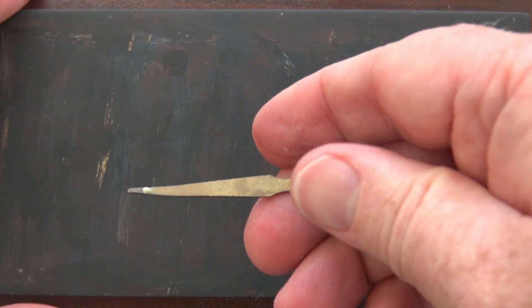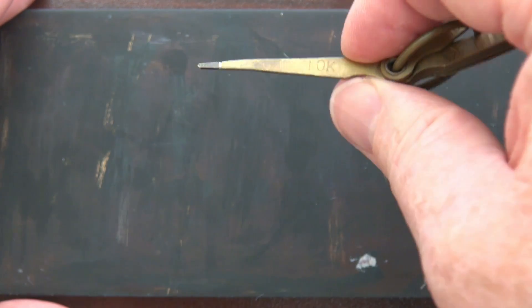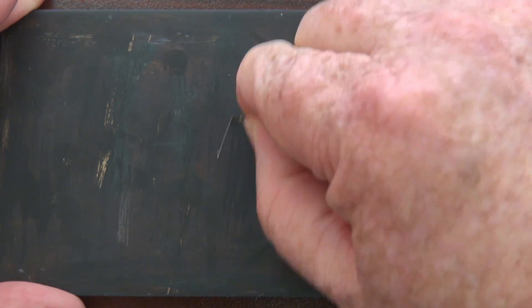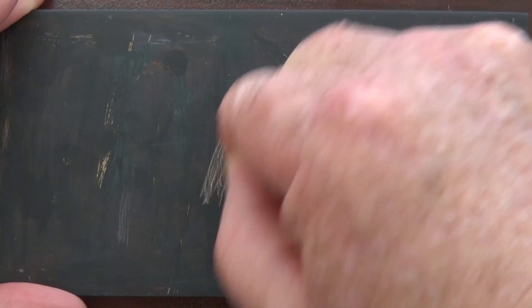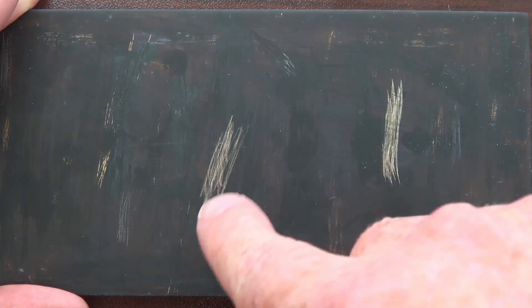Then you take the key. Basically this we know is 10 karat gold. It's basically your control and then you make a rub the same way. Except this one makes a nasty chalkboard sound. And so there's your two - this is the mark I just made with the ring test and then this is with the actual test needle for your control.